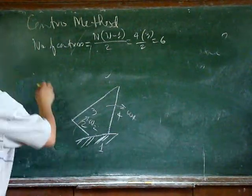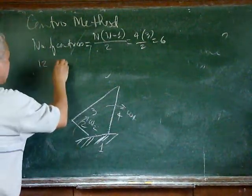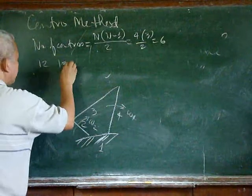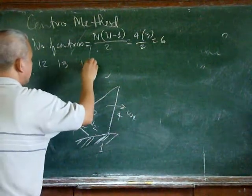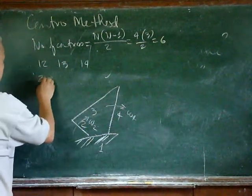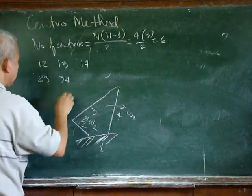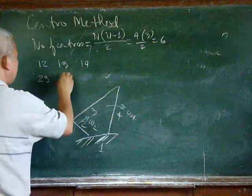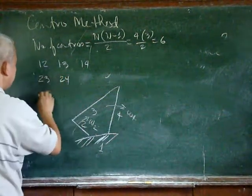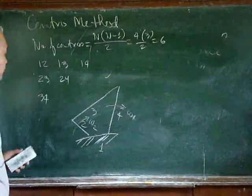And these centrals are: 1-2, 1-3, 1-4, 2-3, 3-4, and 2-4.